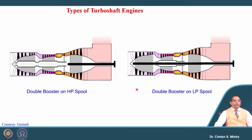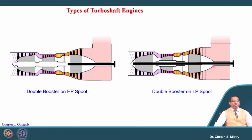Let us look at another configuration called double booster on HP spool. Here both compressor stages — the booster and HP compressor — are connected on the HP turbine, forming the HP spool. The LP turbine is connected with the power shaft and the exhaust exits here. Similarly, there is a configuration where the double booster is on the LP turbine side, where the LP turbine rotates the double booster as well as the shaft, generating power for both compressor rotation and shaft rotation.